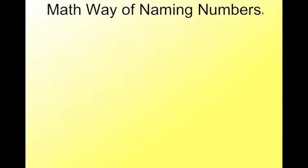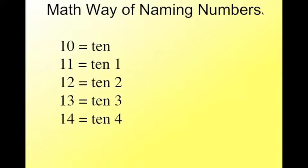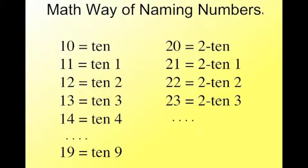We call this the math way of naming numbers. So we have 10, that's easy. 11, we're going to call 10, 1, 10, 2, 10, 3, 10, 4, all the way down to 10, 9. Then we start up with 210, 210, 1, 210, 2, 210, 3, 210, 4, and we keep going until we get all the way down to 9, 10, 9.